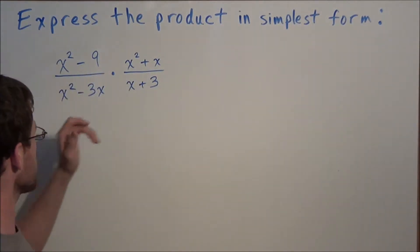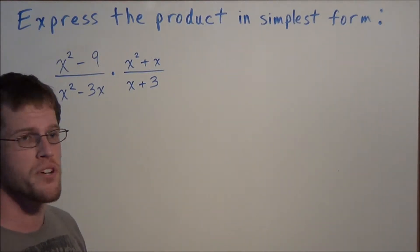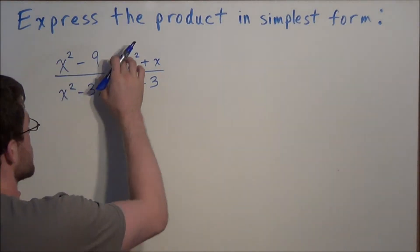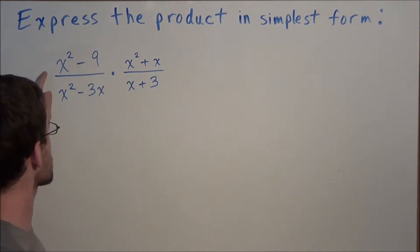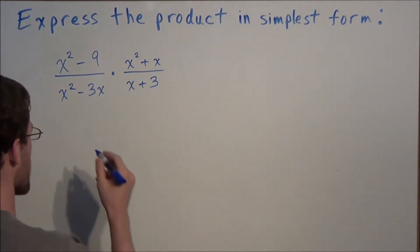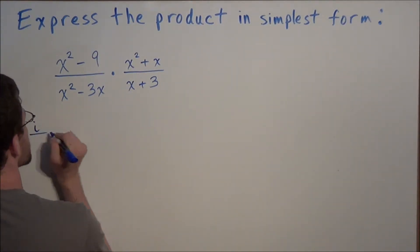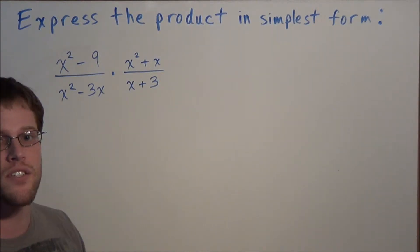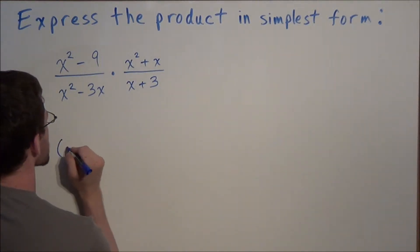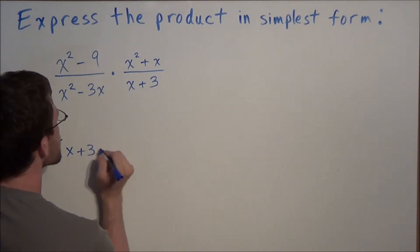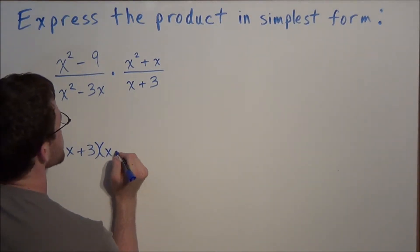To get started, you have to break down each section of both fractions. We can start with the numerator of the first fraction. We'll notice that x squared minus 9 is the difference of perfect squares, so we can break it down as x plus 3 times x minus 3.